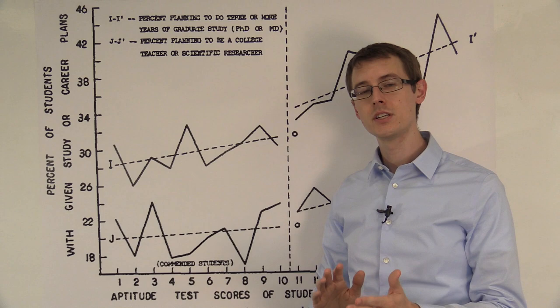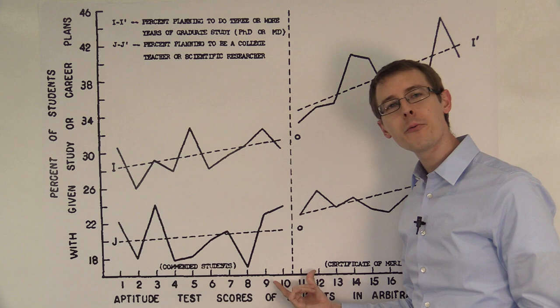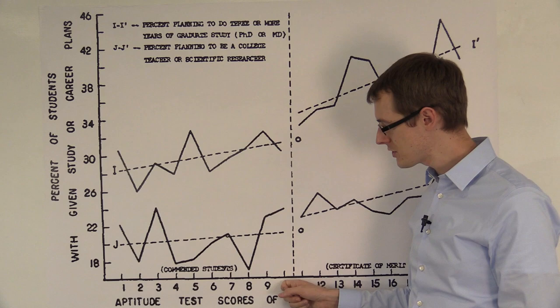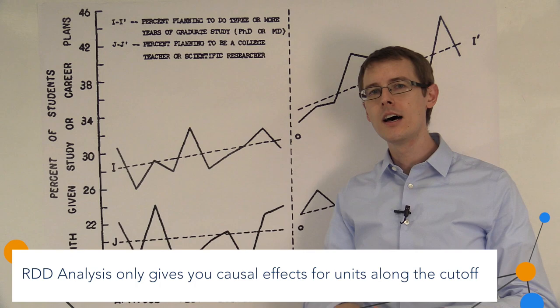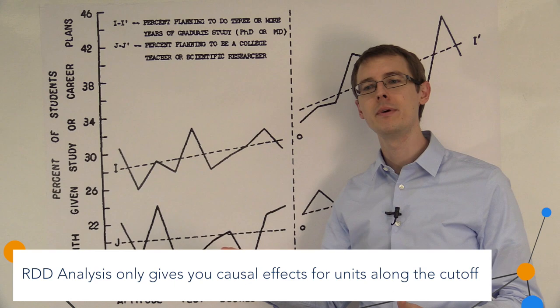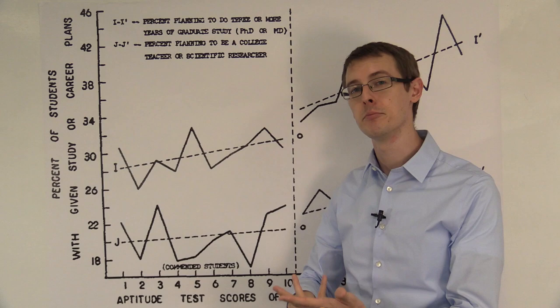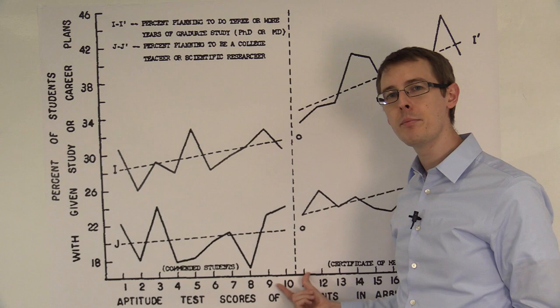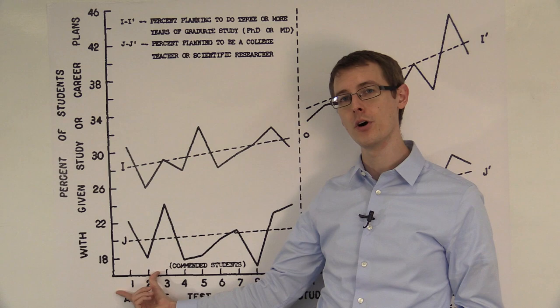The first is that you're only actually going to learn causal effects right around the cutoff, so the causal effects for people who have test scores about 10 or 11. Remember, there are heterogeneous treatment effects out there in the population. Each unit has a different treatment effect of what would happen to them if they got public recognition versus what would happen if they did not. So we're learning something about the average treatment effect for people close to the cutoff, not for people far from the cutoff.